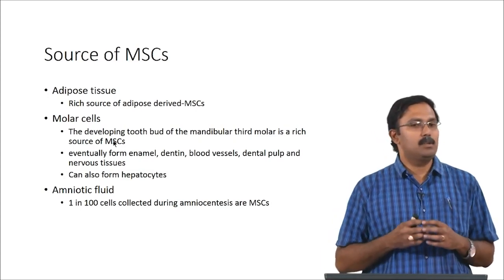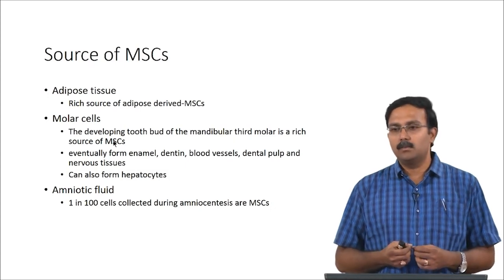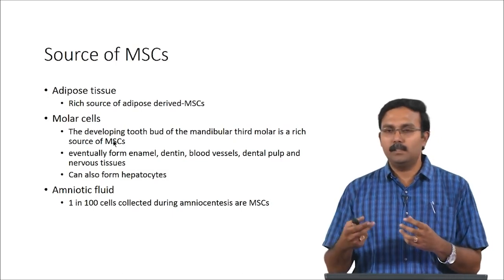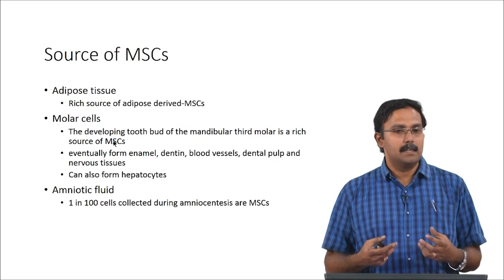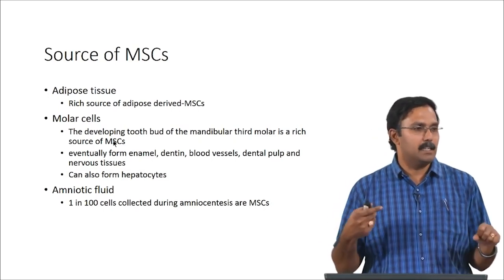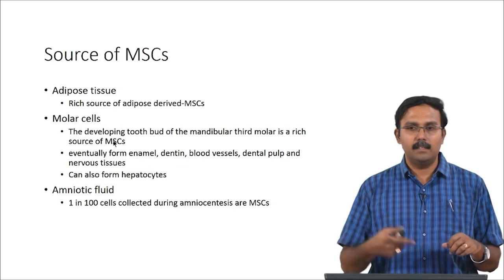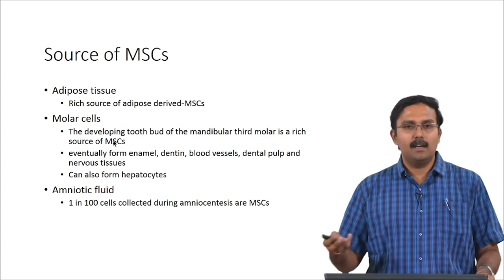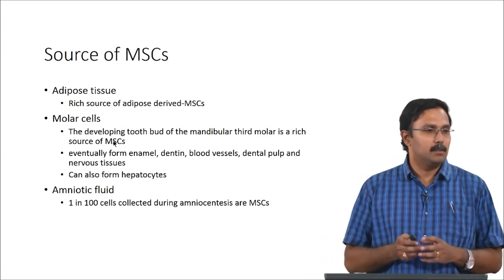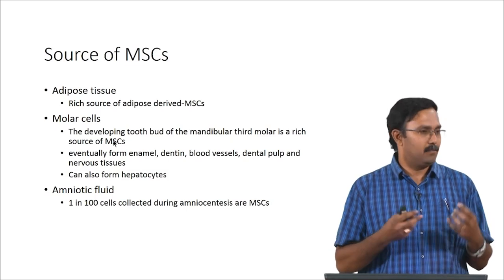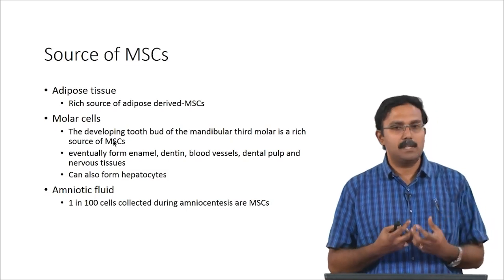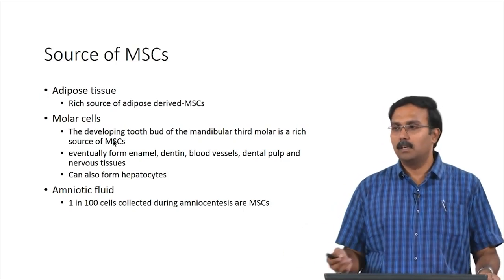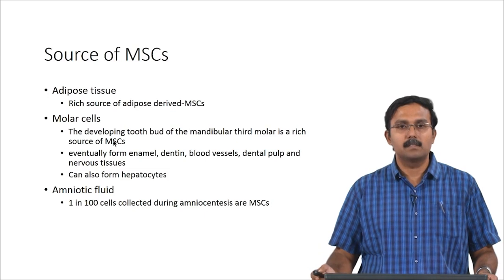Amniotic fluid is also a source from which you can get mesenchymal stem cells — it is the fluid in which the fetus is present, and it can be harvested using a process called amniocentesis, which involves taking a large gauge needle and injecting it into the uterus to draw the amniotic fluid. This is usually done for diagnostic purposes. This amniotic fluid has many cells, and 1 in 100 cells collected using amniocentesis is a mesenchymal stem cell, which could be used for tissue engineering applications.